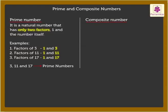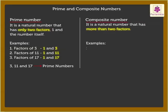A composite number is a natural number that has more than two factors. Look at these examples. The factors of 6 are 1, 2, 3, and 6.